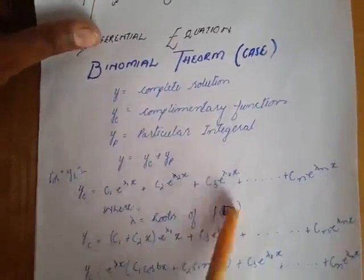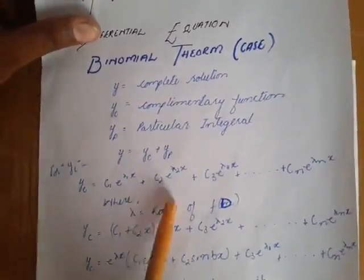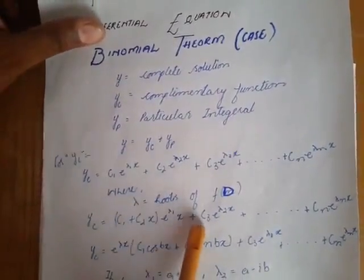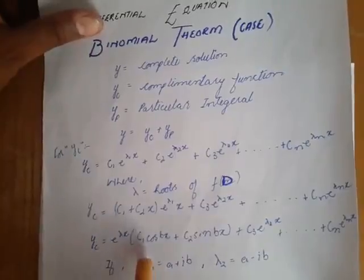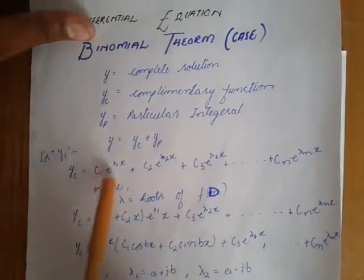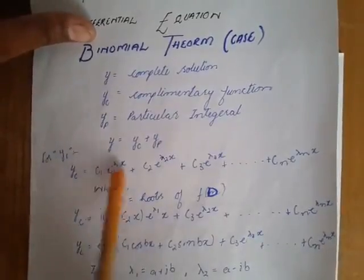For yc, there are three cases. First is real, second is real and repeated roots, and third is imaginary roots. Here, lambda equals to roots.